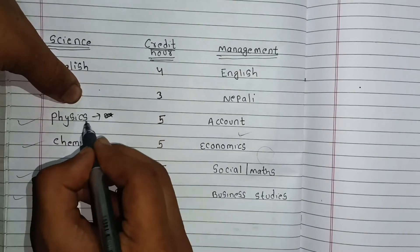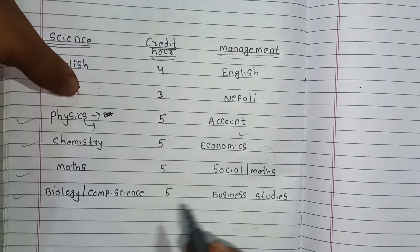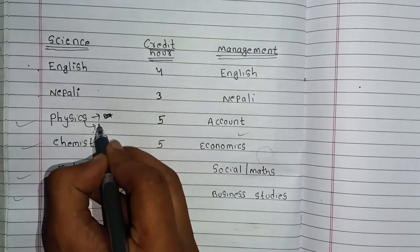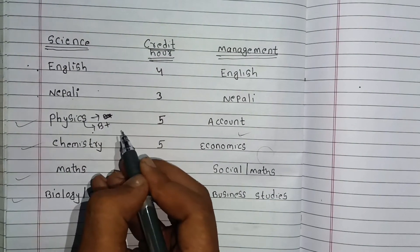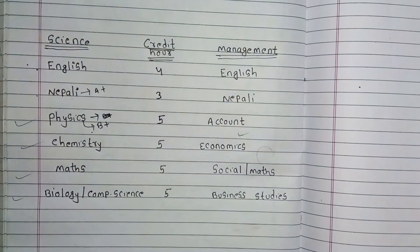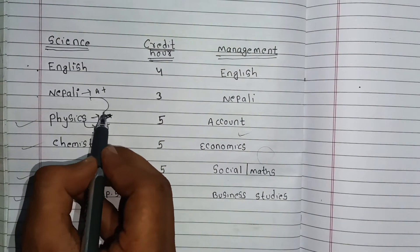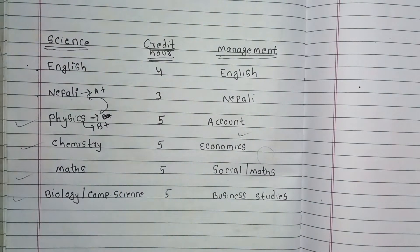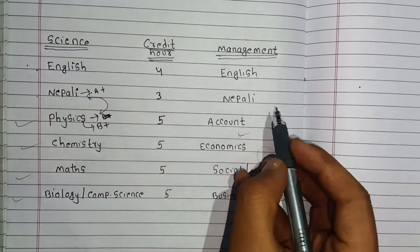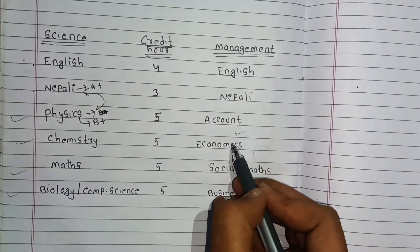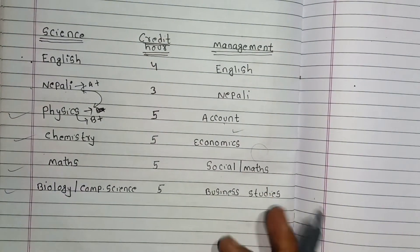The theory score is important in total. If you think of 75, you will have a B+ in theory. If you aim for an A+, the same logic applies. If you think of Physics, Chemistry, Math, and Biology, you will have to apply the same to Account Economics.